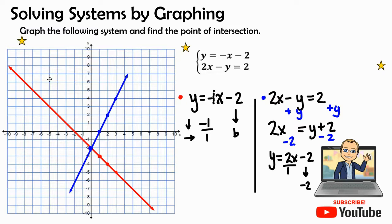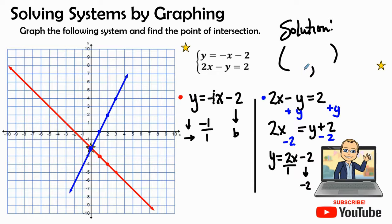We can see the point of intersection is right here. Our solution is always an ordered pair: the solution is (0, negative 2). We don't move left or right — it's zero — and we go down the y-axis to negative two. That's our solution.